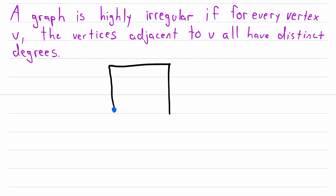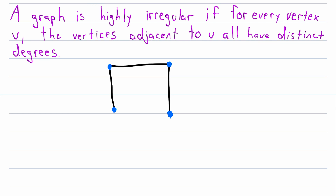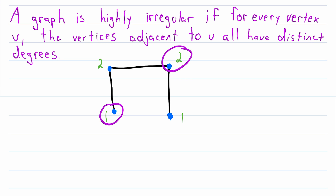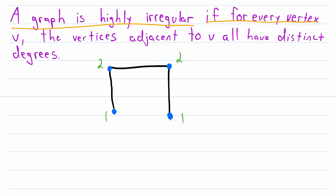Let me draw a simple example of a highly irregular graph. So this is a highly irregular graph — why? Because if we look at any vertex, all of its neighbors, the adjacent vertices, will have distinct degrees. Let's label the degrees: this vertex has degree one, this one degree two, this one degree two, and this one degree one. Looking at the degree-one vertex, it only has one neighbor, so trivially all its neighbors have distinct degrees. Looking at a degree-two vertex, its two neighbors have distinct degrees: one and two. Same for the other degree-two vertex, and the last degree-one vertex only has one neighbor.